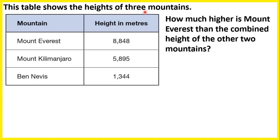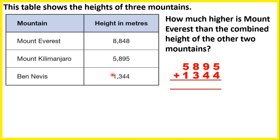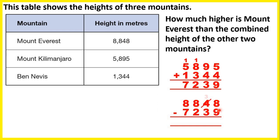This table shows the heights of three mountains. How much higher is Mount Everest than the combined height of the other two mountains? Mount Everest is 8,848 metres. We want to know how much more than the combined height of the other two. So we add 5,895 plus 1,344, and that gives us 7,239. So we need to find the difference — 8,848 metres minus 7,239 — and when we do the subtraction, we get 1,609 metres.